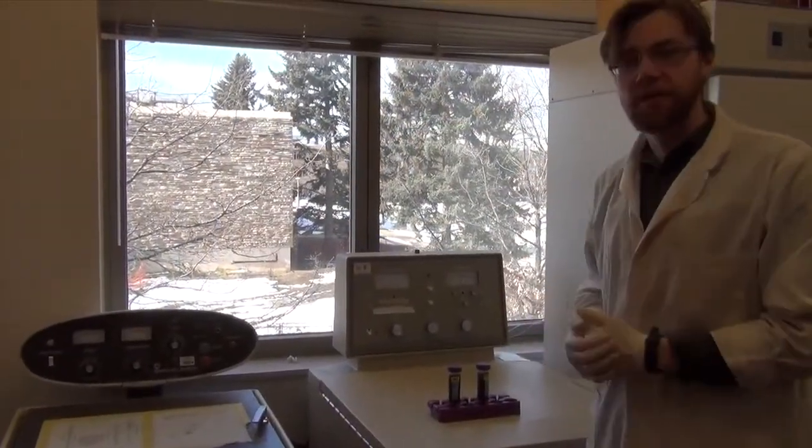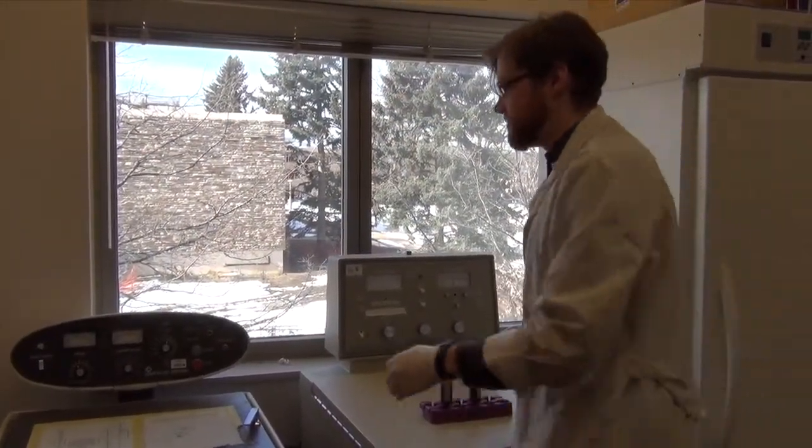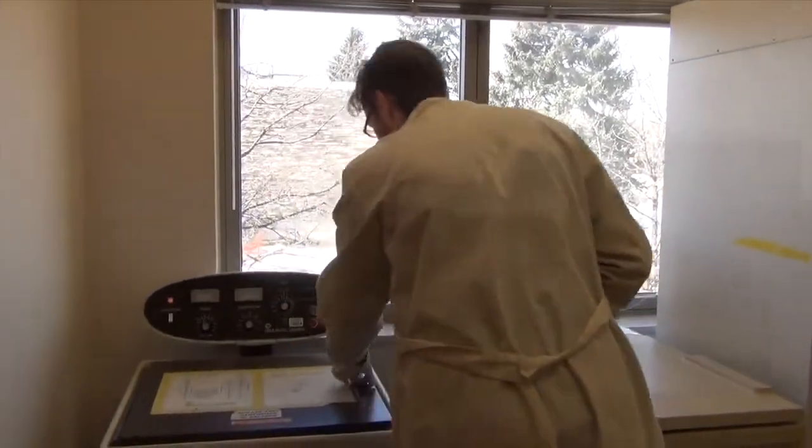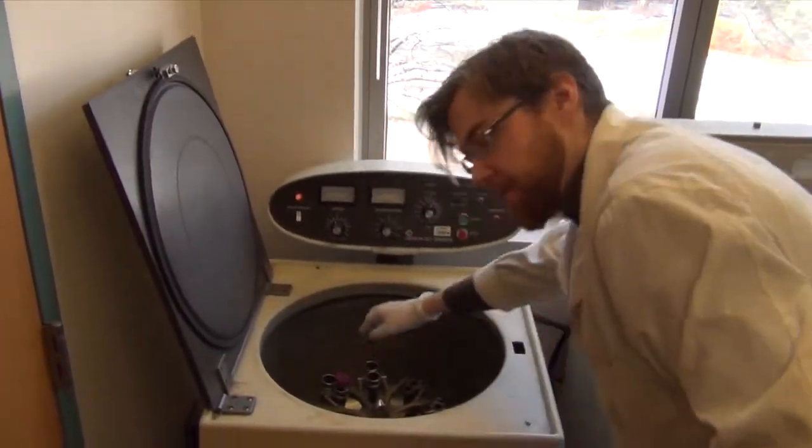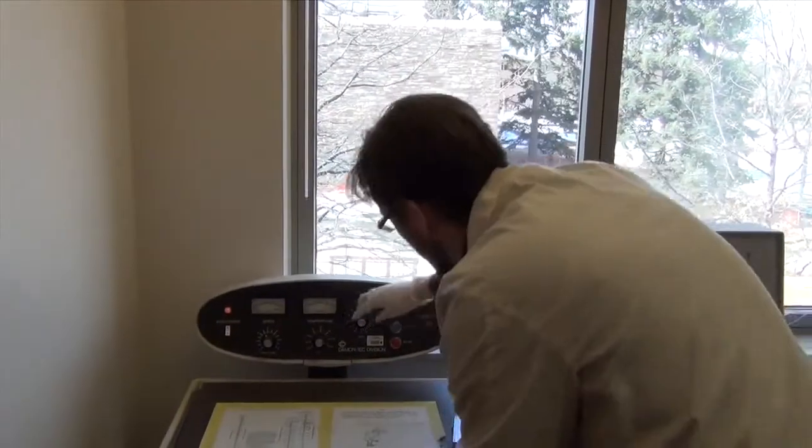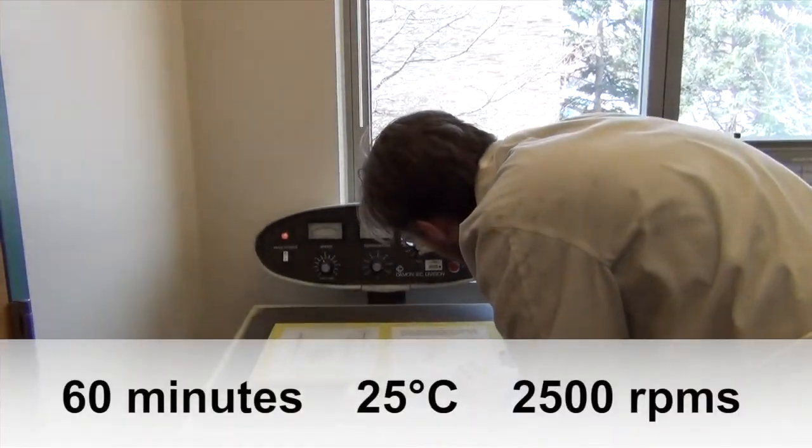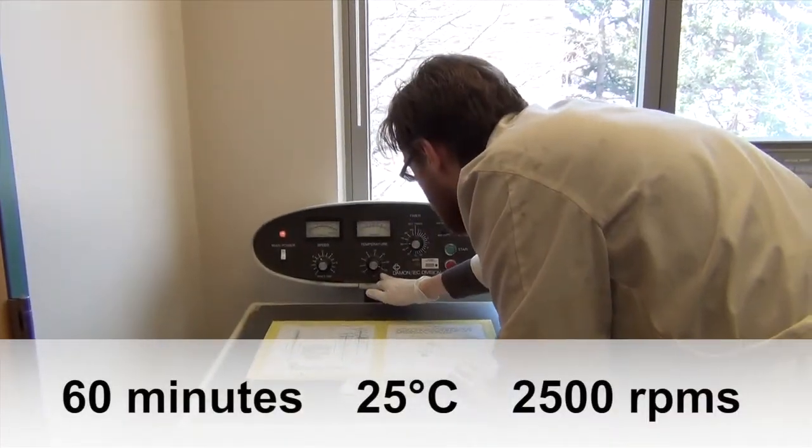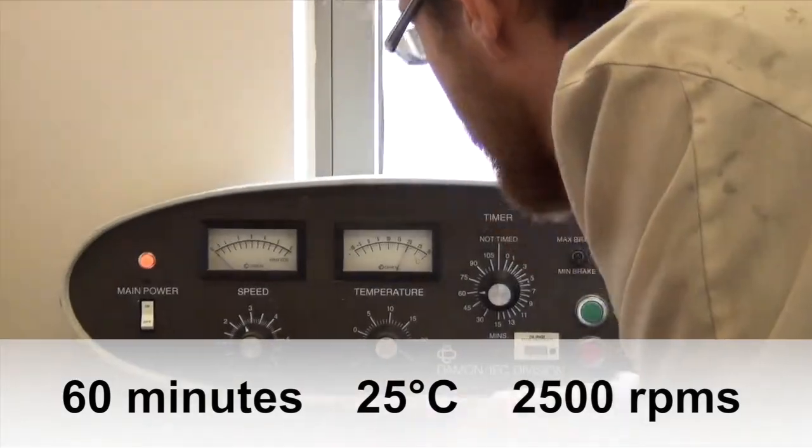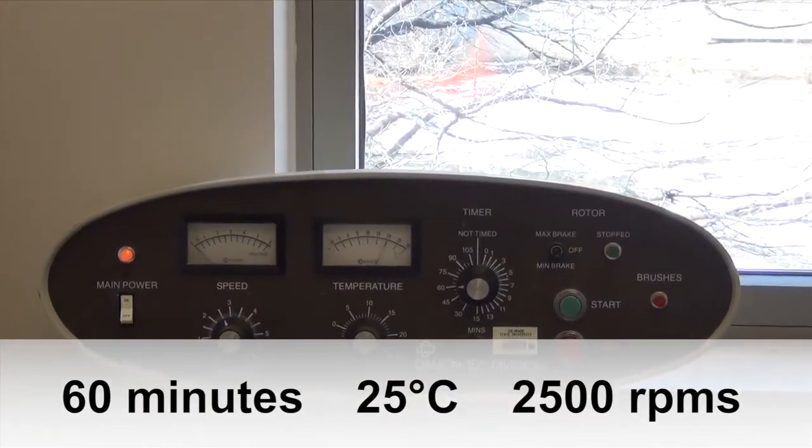Now the tubes are the same mass, we can put them in the centrifuge and they will be balanced. Put them across from each other. Set it for 60 minutes at 25 degrees C at 2,500 rotations per minute.